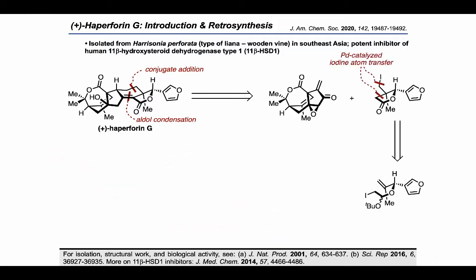On the other hand, the furanyl-lactone intermediate they would need as a late-stage coupling partner might be seen as the product of a palladium-catalyzed iodine-atom transfer reaction. Looking to simplify further, the authors thought about using an asymmetric addition of an organozinc in combination with an appropriate aldehyde electrophile. These are the main lines of retrosynthetic analysis the authors presented for this complex target. Let's check out how they were able to implement them in the forward synthesis.